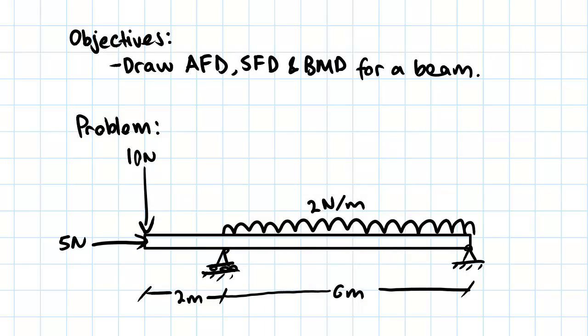The objective of this video is to draw an axial force diagram, a shear force diagram, and a bending moment diagram for a beam. The problem we've been given is a beam supported at two points: a roller joint and a pin joint. We have a 10 Newton force acting at one location, a 5 Newton force acting at another, and a 2 Newton per meter uniformly distributed load acting over a length of 6 meters.